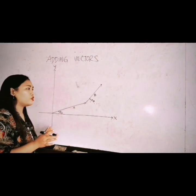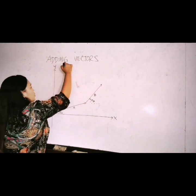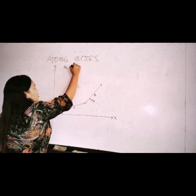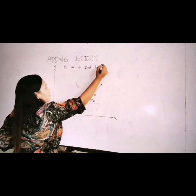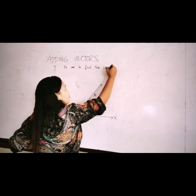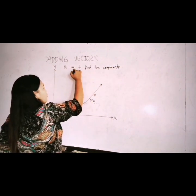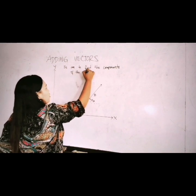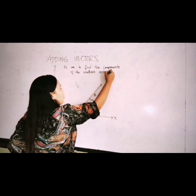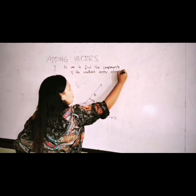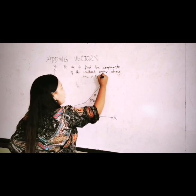Let's first write the resultant vector. So we have to find. The problem here is we are to find the components of the resultant vector along the x and y axis.